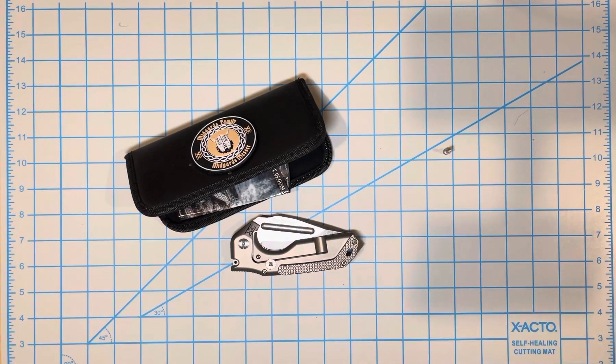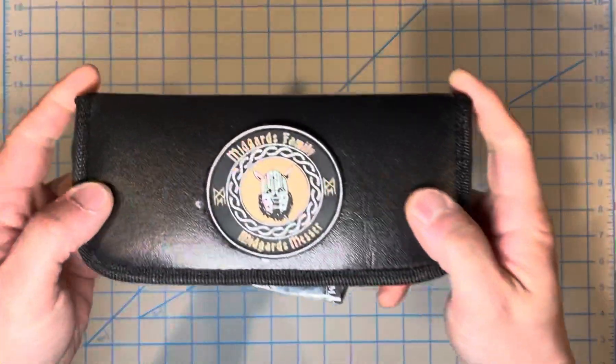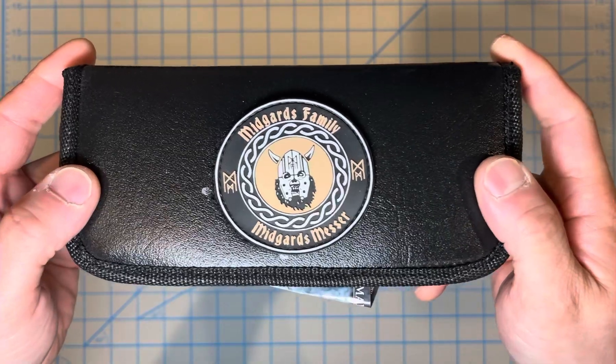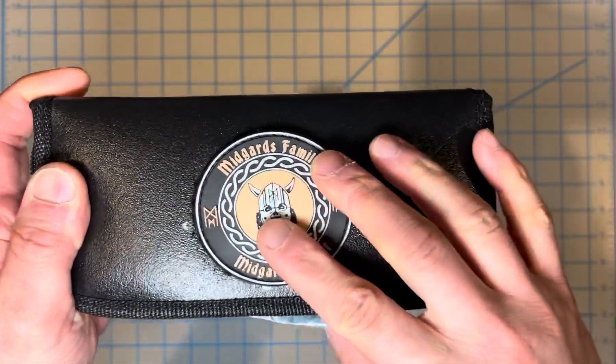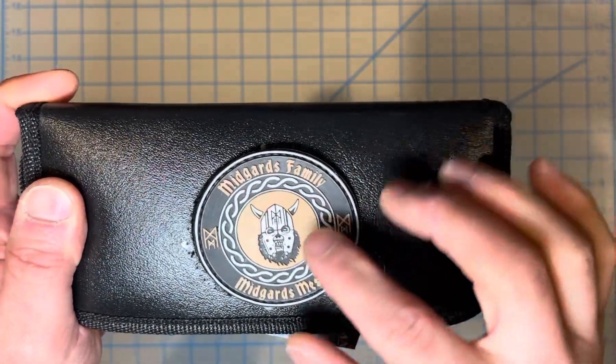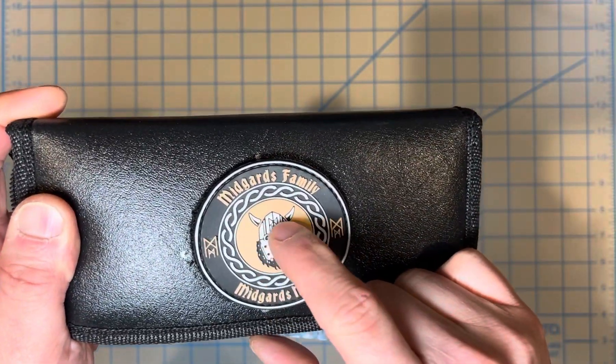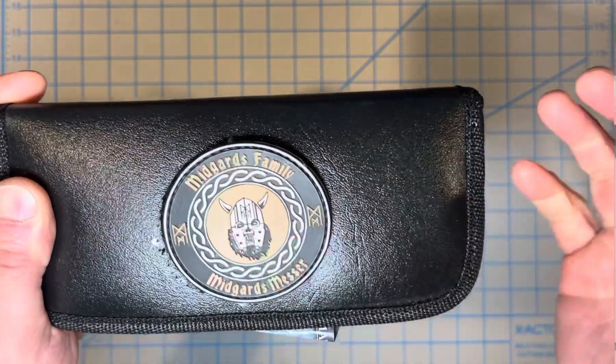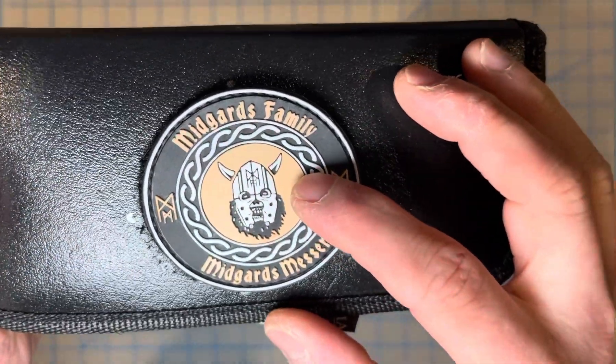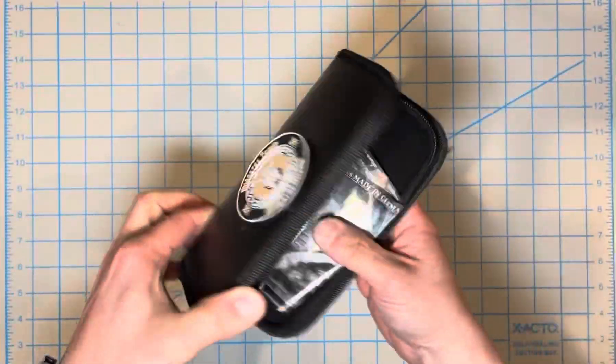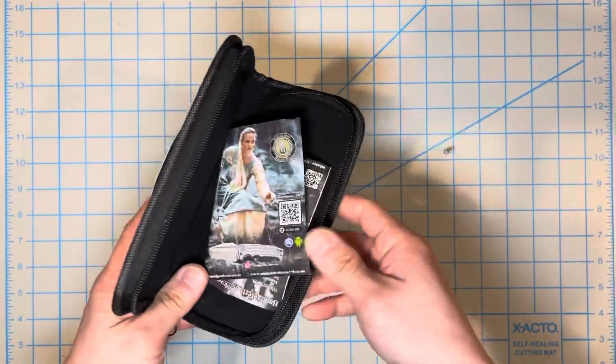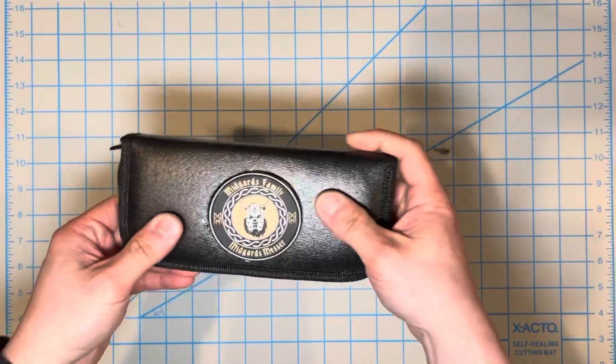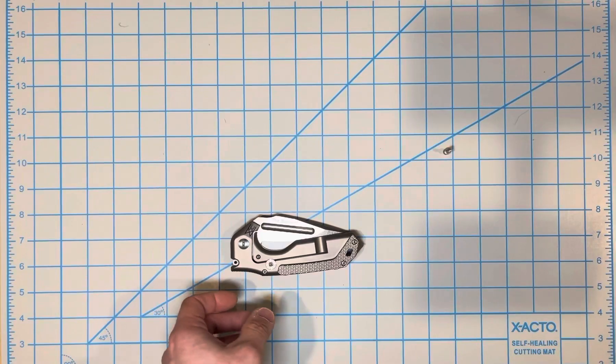Hey what's up YouTube, so today I want to show you a knife that is from Midgard Messer and they're from out of Germany. You get it in this pouch with this PVC badge that has this kind of cool Viking-ish character on it. You also get this literature. I'll provide their information in the description.